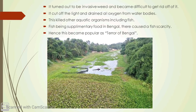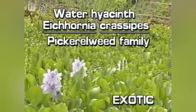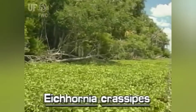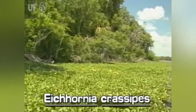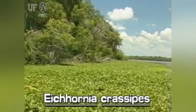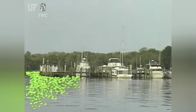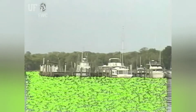It grows at an alarming rate and spreads over a large surface area within a very short time period. As a result, it blocks all the light crossing the surface and drains the oxygen present in the water bodies. This ultimately causes the death of several aquatic lives including fish, which is a supplementary food for Bengal. It caused scarcity of fish in Bengal. Hence, it is known as Terror of Bengal.